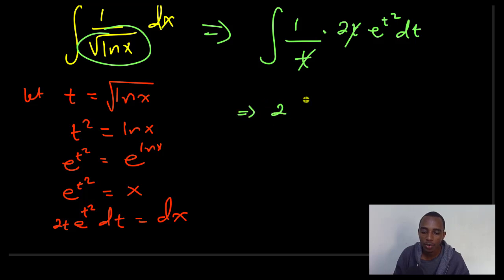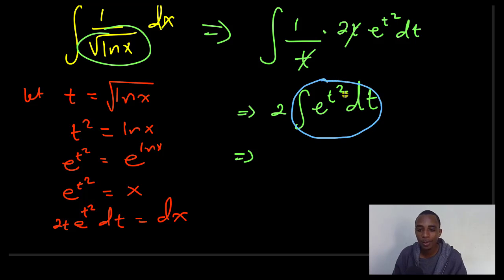Then I have 2 times the integral of exponent t squared dt, which is actually a standard integral that we already know about. This here is a standard integral. It's actually one of the interesting standard integrals that cannot be expressed in terms of elementary functions.